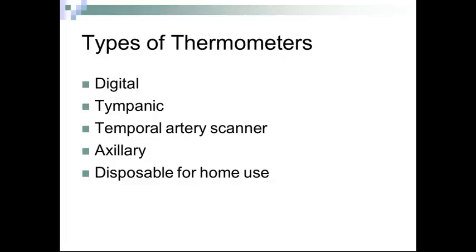We have different types of thermometers. Digital thermometers for oral use have a blue top, while digital thermometers for rectal use have a red top — you cannot interchange the two. A tympanic or aural thermometer is for the ear. Temporal artery thermometers scan across the forehead and down under the ear. The axillary thermometer is for the armpit, placed on bare skin with the armpit closed as tightly as possible. We also have disposable thermometers for at-home patient use.